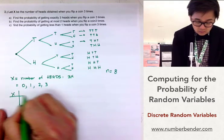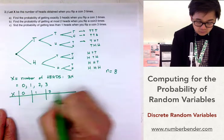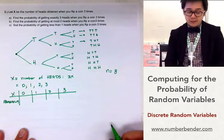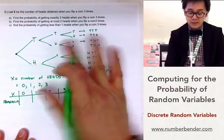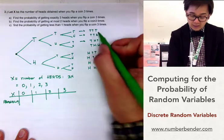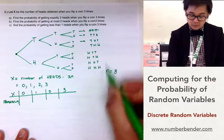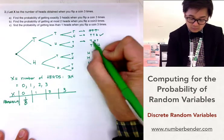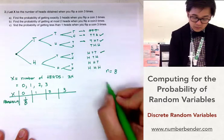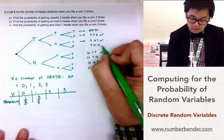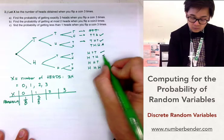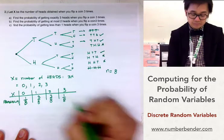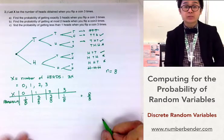To build the table, x goes from 0 to 3. The probabilities are found from the tree diagram. Getting zero heads: only TTT, so 1/8. Getting one head: TTH, THT, HTT — three outcomes, so 3/8. Getting two heads: THH, HTH, HHT — three outcomes, so 3/8. Getting three heads: HHH — only one, so 1/8. The total is 8/8, confirming this is a legitimate probability model.